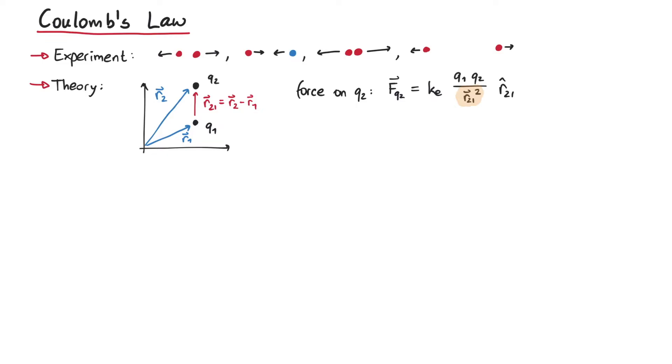And what about the direction? Looking at the diagram, if q1 and q2 are both positive or both negative, the force should point towards the direction of r21. That's correct. And if one of them is positive and the other negative, the force should point opposite to r21, which is also the case.